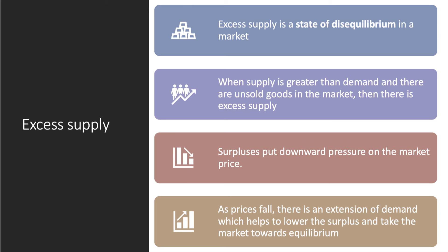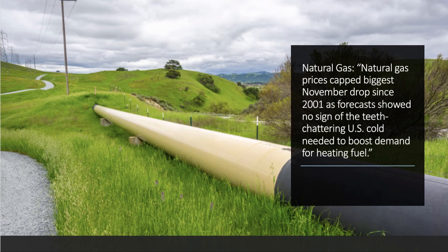Excess supply is another state of disequilibrium — there are unsold goods in the market. Surpluses tend to put downward pressure on the market price, and as the price goes down that brings more consumers into the market. Their effective demand goes up, which helps to lower the surplus and nudge the market towards an equilibrium.